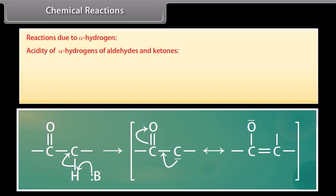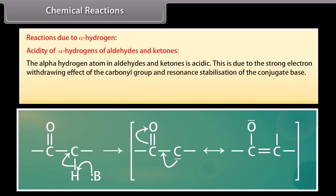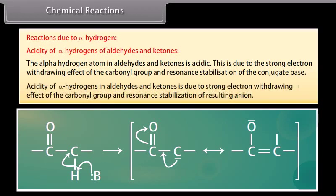Reactions due to alpha hydrogen. Acidity of alpha hydrogens of aldehydes and ketones: the alpha hydrogen atom in aldehydes and ketones is acidic. This is due to the strong electron-withdrawing effect of the carbonyl group and resonance stabilization of the conjugate base. Acidity of alpha hydrogens is due to the strong electron-withdrawing effect of the carbonyl group and resonance stabilization of the resulting anion.